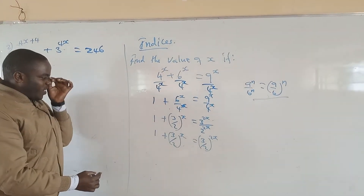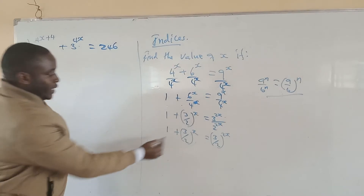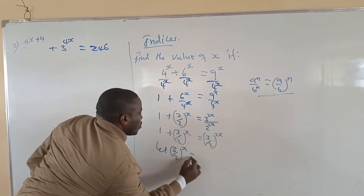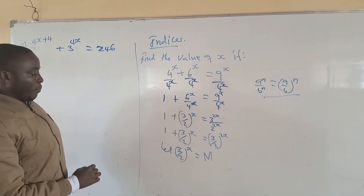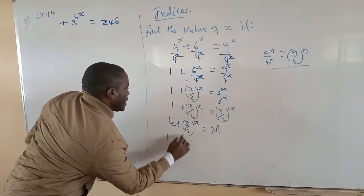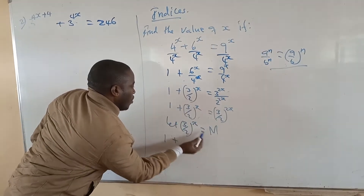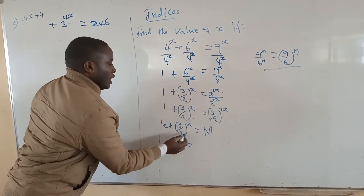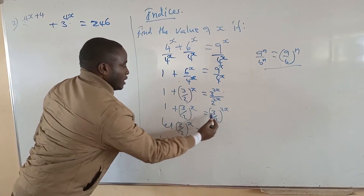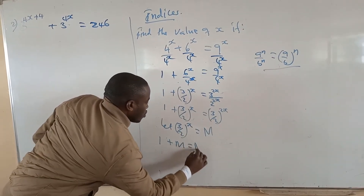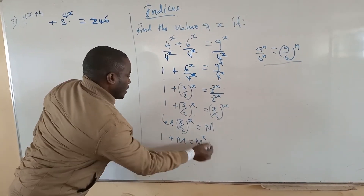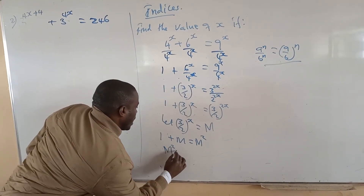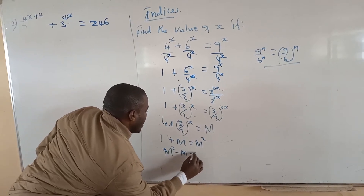From there, we let 3 over 2 to the power x equal m. Then replacing, we get 1 plus m equals m squared, because the 2x power means it becomes m squared. Rearranging gives us the quadratic equation: m squared minus m minus 1 equals 0.